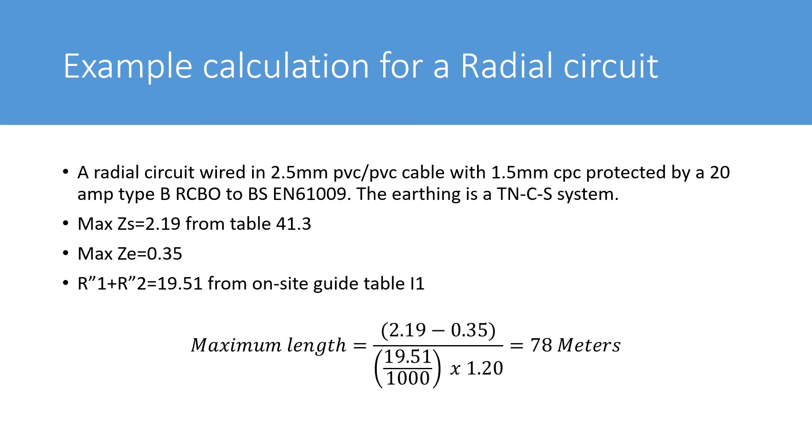So one tip that I found when doing this particular equation is use the whole value that you get in your calculator rather than trying to round it down to two or three decimal places. I found that that really makes a difference to the answer that you get. So when you divide 19.51 by 1000, use the whole number that you get, which should be 0.01951.